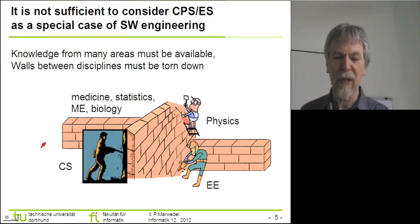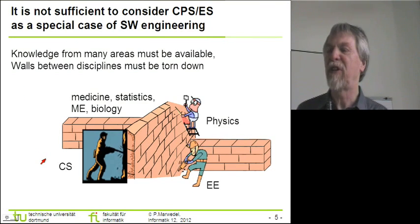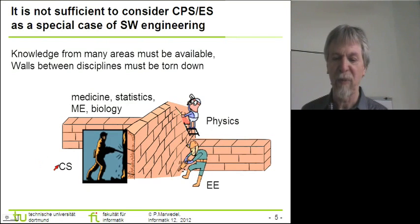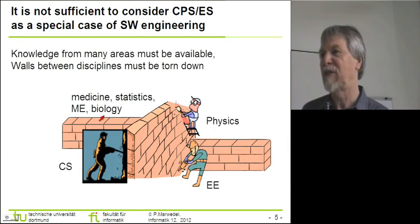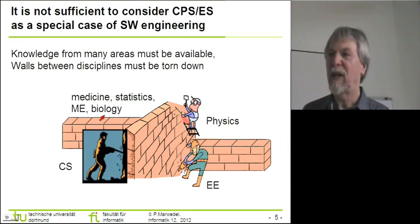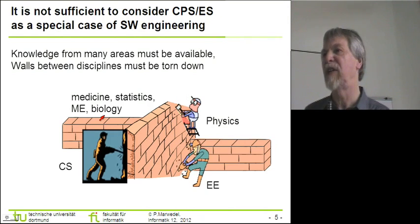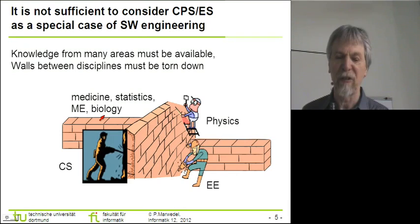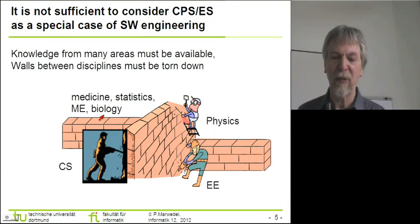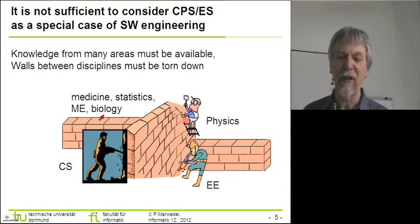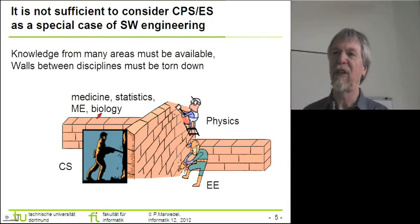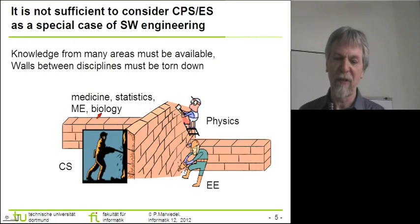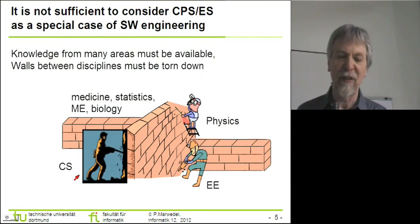We can see that there is a large amount of areas in science in general that are relevant: computer science, electrical engineering, physics, statistics, medicine, mechanical engineering, and there are very close links to biology. Unfortunately, the links between these areas are not as strong as they should be. But for embedded system design, we should tear down the walls between these different areas, because much of the interest in embedded systems is actually in linking these things together. I created a little animation which tells us how things should be.